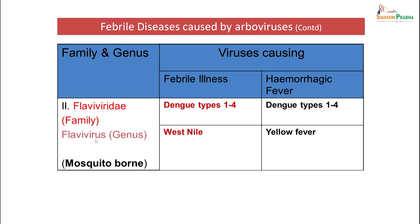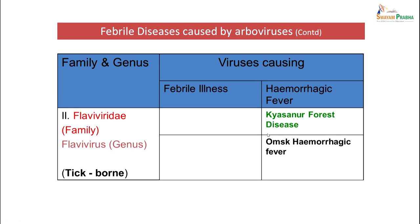Flaviviridae is another family with the Flavivirus genus, again mosquito-borne, that can cause illnesses like dengue (types 1 to 4), dengue hemorrhagic fever, West Nile disease, and yellow fever. Flaviviridae Flavivirus genus can also produce tick-borne diseases — Kyasanur Forest virus disease and Omsk hemorrhagic fever, both of which are hemorrhagic fevers.